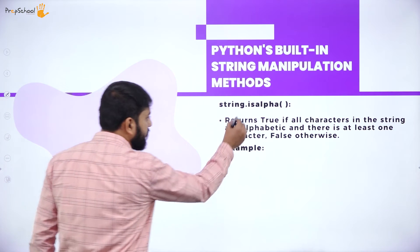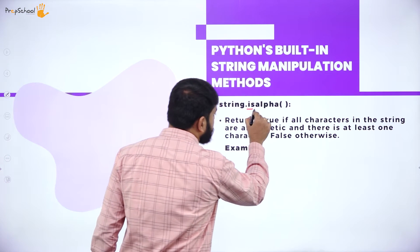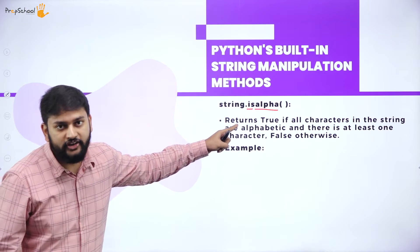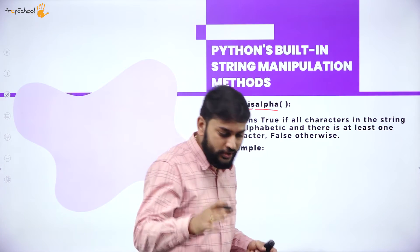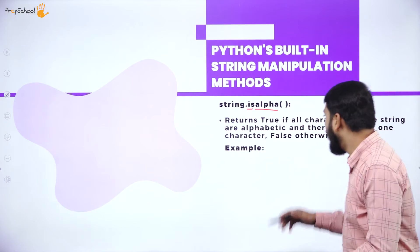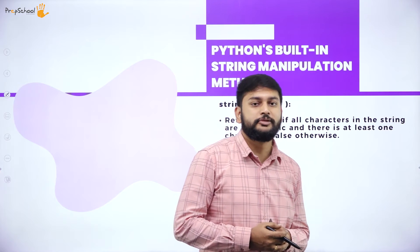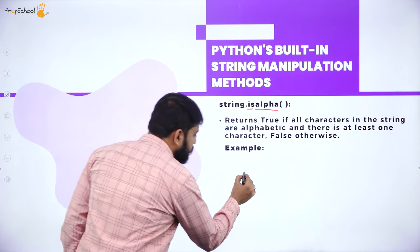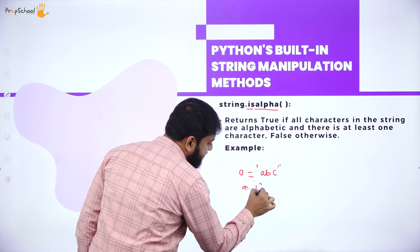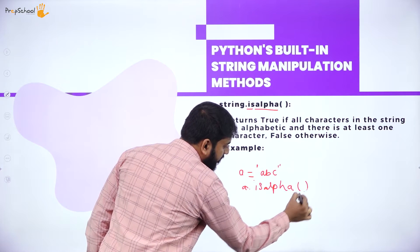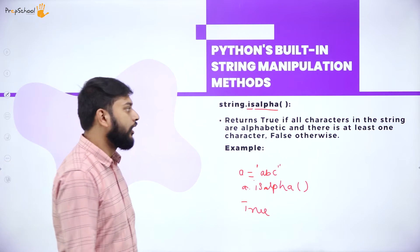The next method is isalpha(). It returns True if all the characters in the string are alphabets. For example, if a = 'abc', then a.isalpha() returns True. If the string contains digits or other characters, it returns False.